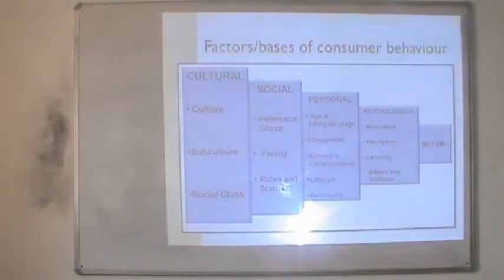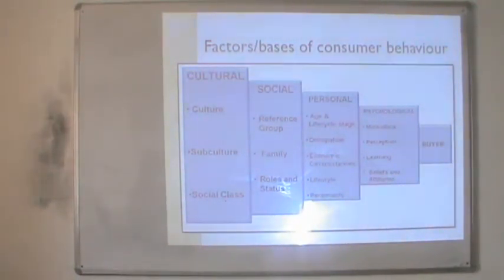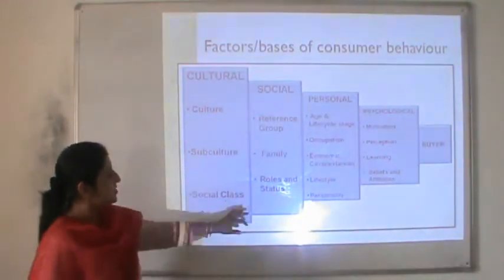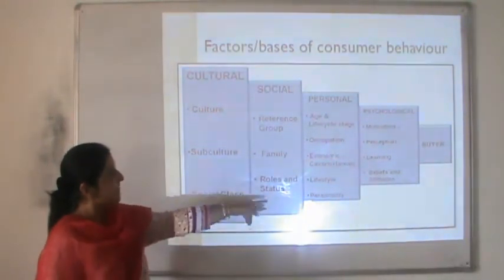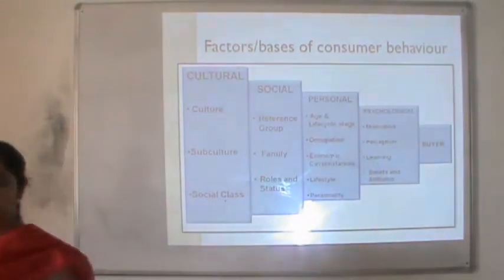This is a detailed analysis of the different factors which influence buyer behavior — the various bases on which consumers may differ in the choices they make from all available alternatives in the market. The most broad category is culture, the second is social classification, the third is personal classification, and the fourth is psychological classification.